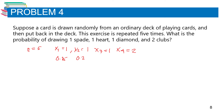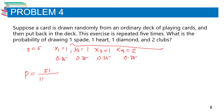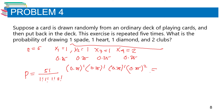Using the formula: P(x) equals 5 factorial over 1 factorial times 1 factorial times 1 factorial times 2 factorial, multiplied by 0.25 raised to 1, times 0.25 raised to 1, times 0.25 raised to 1, times 0.25 raised to 2. Calculating this with a calculator gives a result of 0.05859.